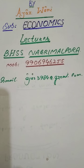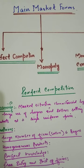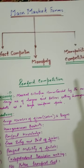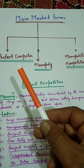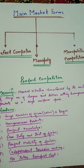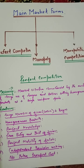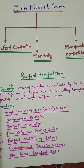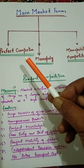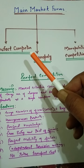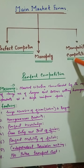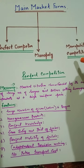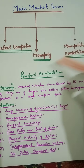Today let's move to the classification of markets. There are three important market forms in your syllabus: perfect competition, monopoly, and monopolistic competition. Under imperfect markets we also have oligopoly, but we have to discuss only these three main forms.